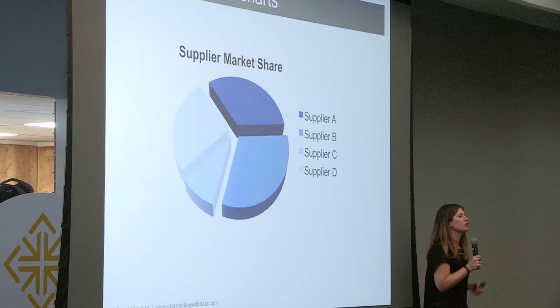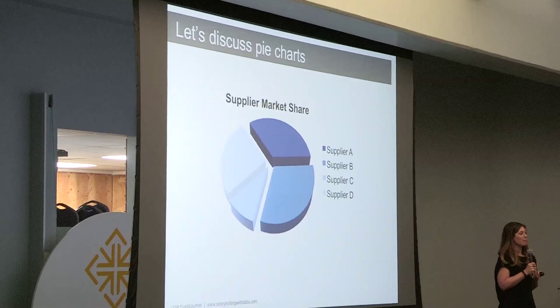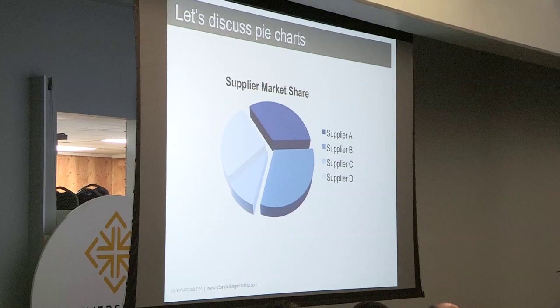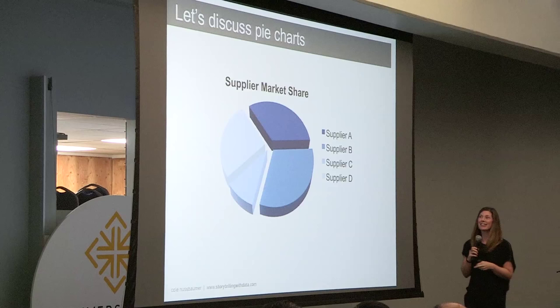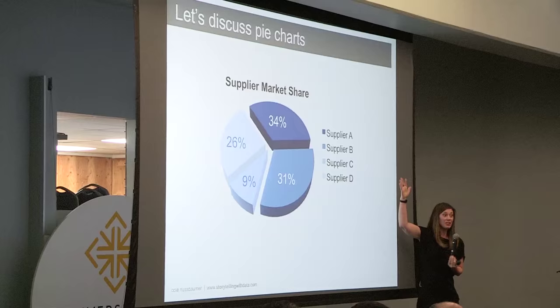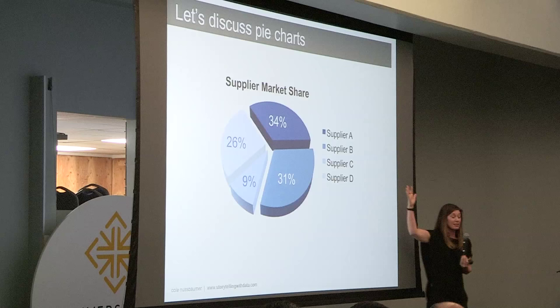Let's spend a moment on pie charts. Here is supplier market share across four suppliers A, B, C, and D. If I asked you which supplier makes up the biggest share of market, most people say B — the bottom right medium blue segment. But supplier A, which looks smaller, is actually bigger than supplier B. What's going on here? 3D perspective — it's making the top pieces appear farther away and smaller than they actually are, and the bottom pieces appear closer and bigger than they actually are.